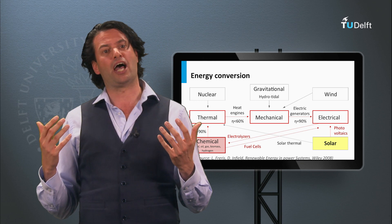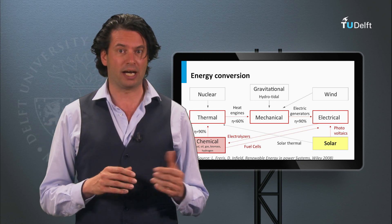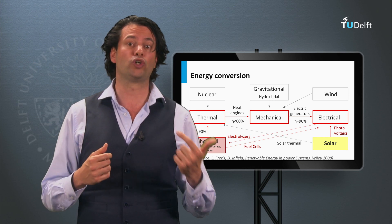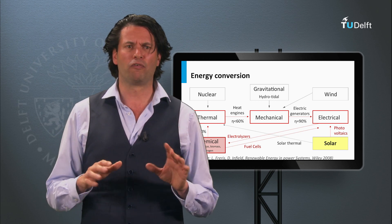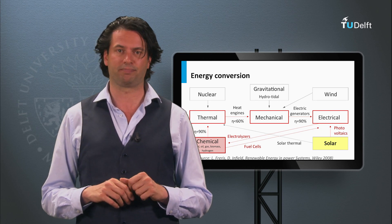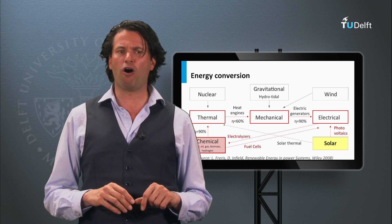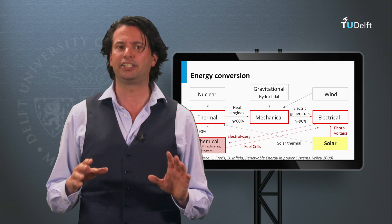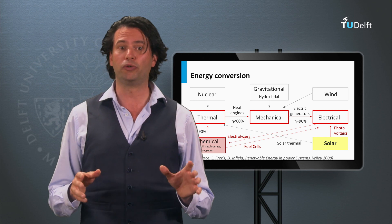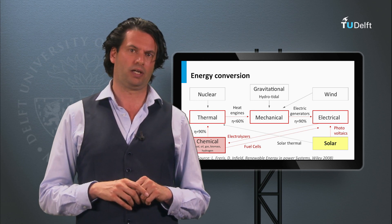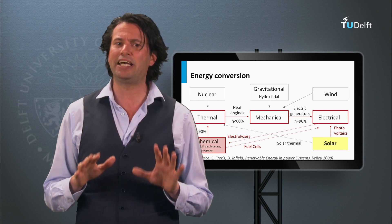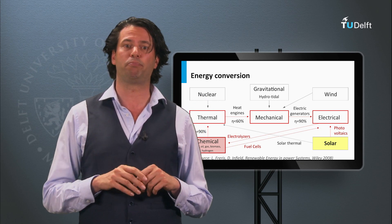From all energy sources — chemical, thermal, nuclear, hydro, wind, solar, and geothermal — roughly a third is being used to generate electricity. Electricity is a form of energy that can be easily and cheaply transported with relatively small losses through an electric grid. We might not realize it anymore, but electricity has made today's modern society possible.